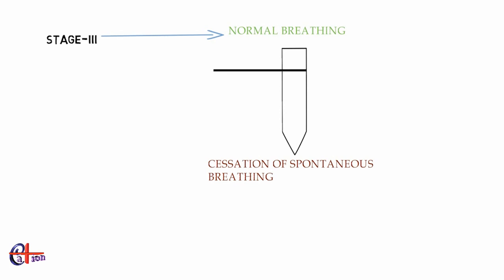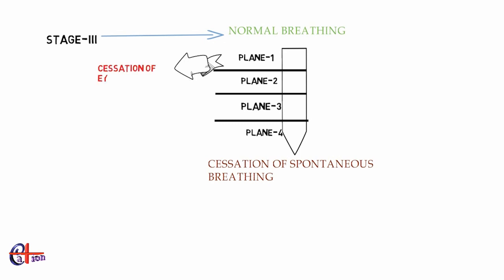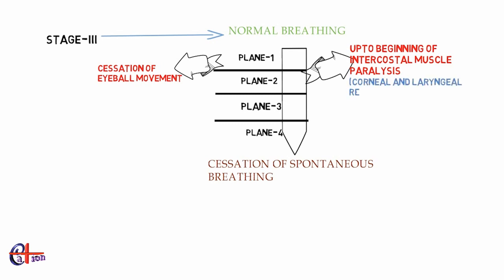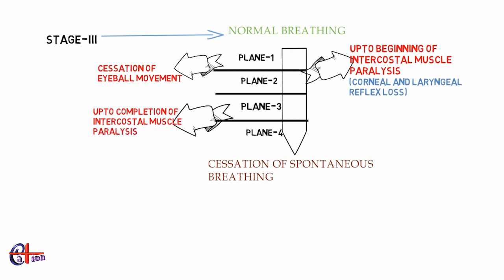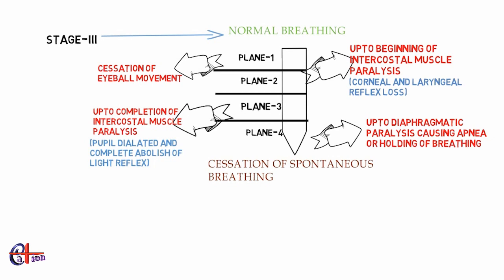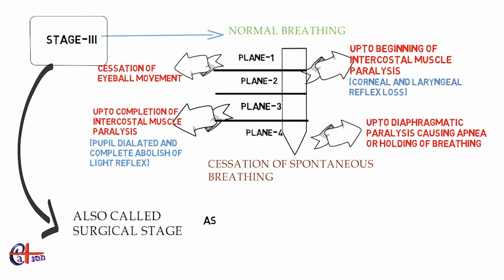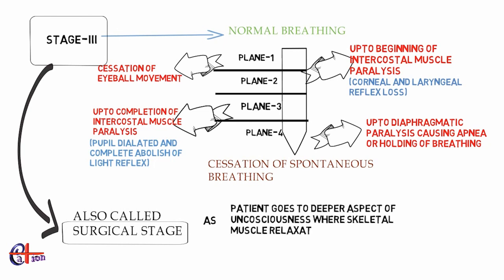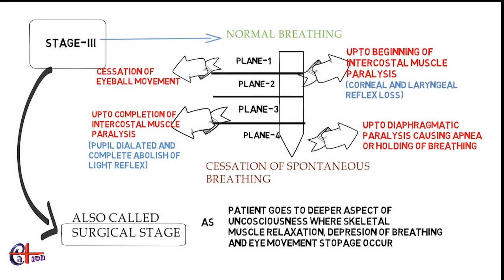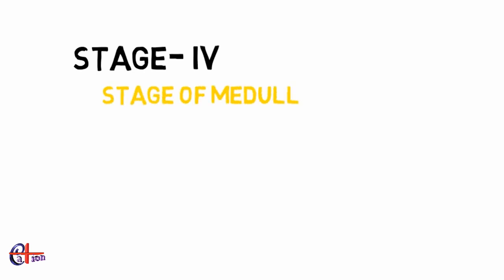Stage three extends from normal breathing to cessation of spontaneous breathing and is divided into four planes. In plane one, cessation of eyeball movement occurs. In plane two, intercostal muscle paralysis begins and corneal and laryngeal reflexes are lost. In plane three, intercostal muscle paralysis is complete, pupils are dilated, and there is complete abolition of light reflexes. In plane four, diaphragmatic paralysis causes apnea. Actual surgeries are performed in this stage, also known as surgical anesthesia.